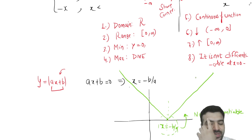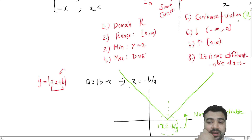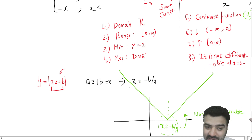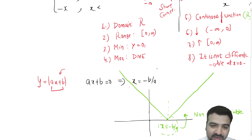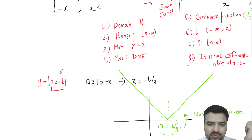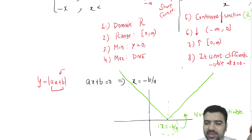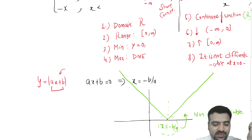So the modulus function is continuous everywhere in its entire domain ℝ, but it is not differentiable at x = 0 (or at x = -b/a in the general form). I hope this is clear to all of you. Thank you for watching.